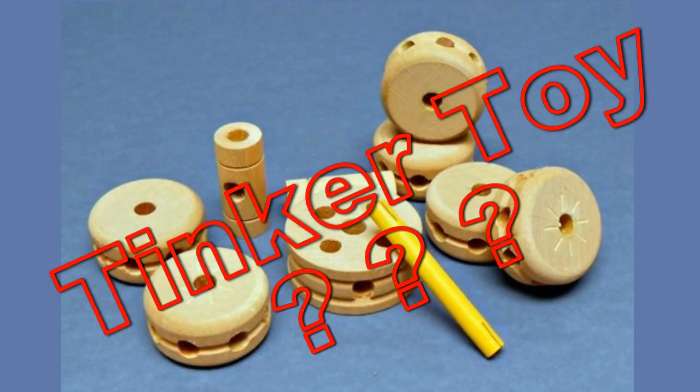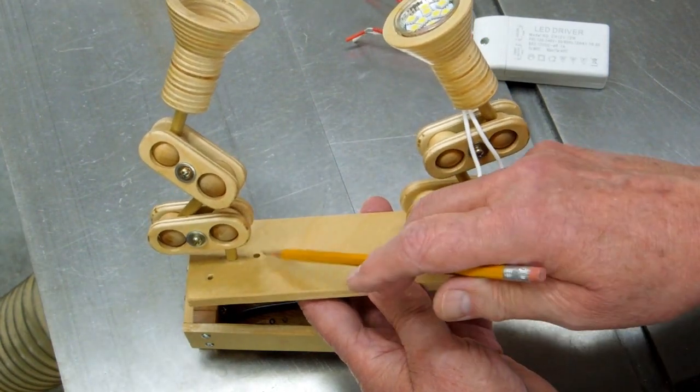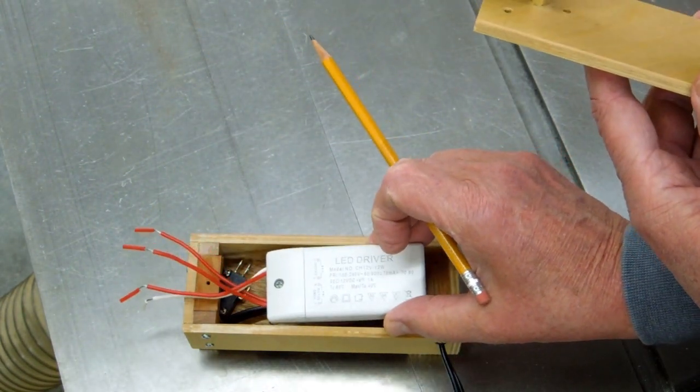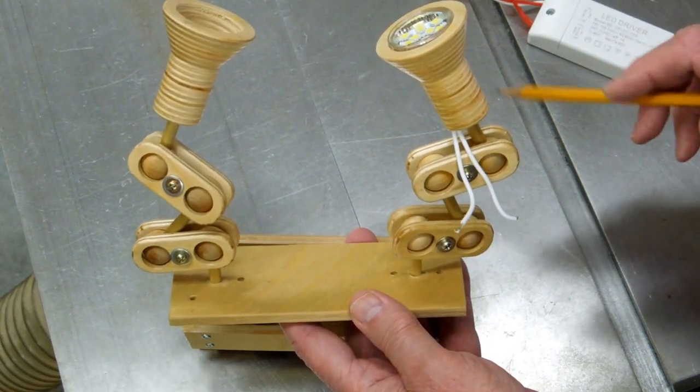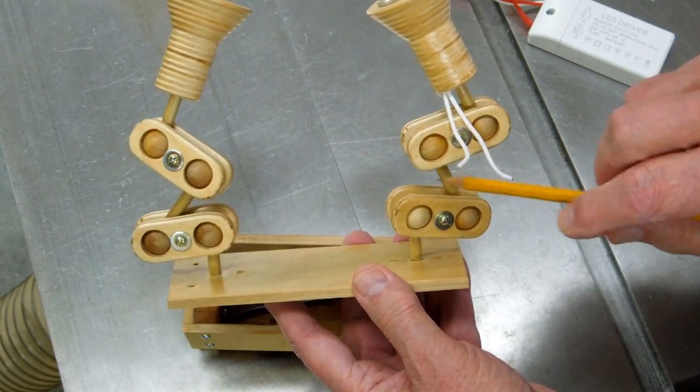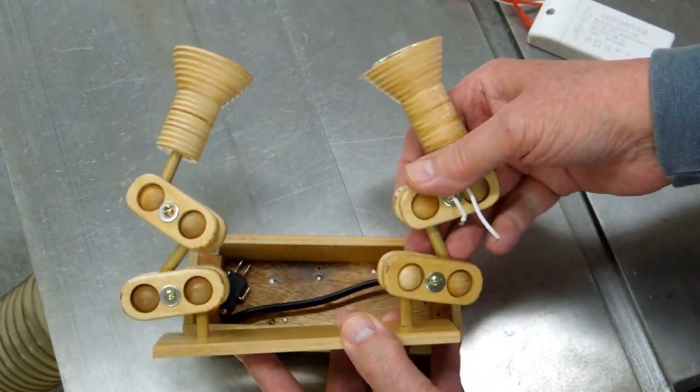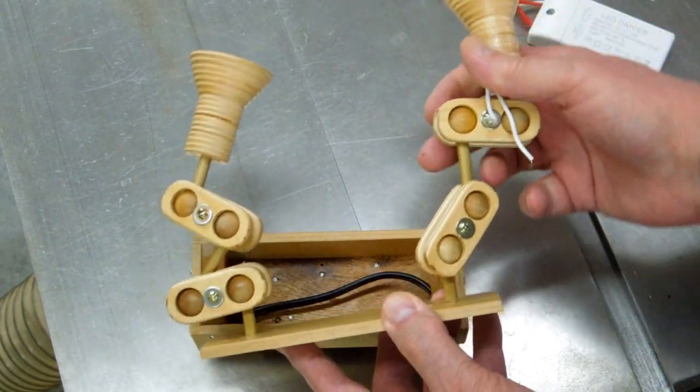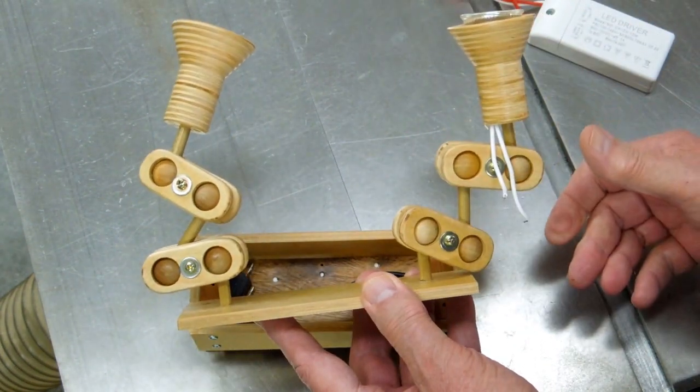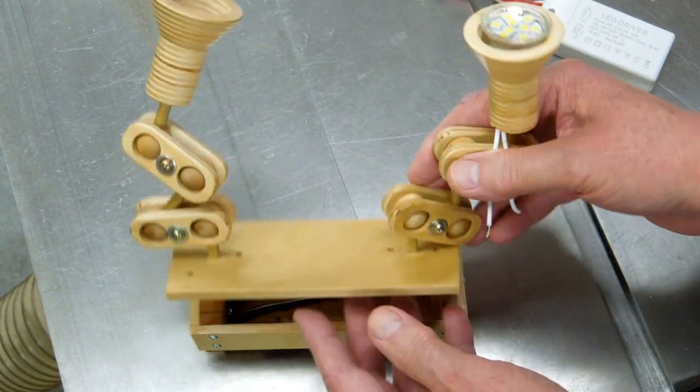This lid will screw to the top of the box. I've assembled all the pieces for the flexible joints for the lights. Wires will come through these two holes which will connect with the transformer inside the box and there'll be enough wire here to allow these to move into whatever position we need. And I've sprayed everything with two coats of deft lacquer.